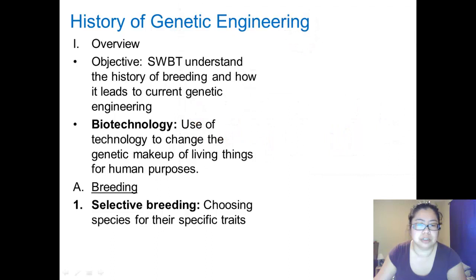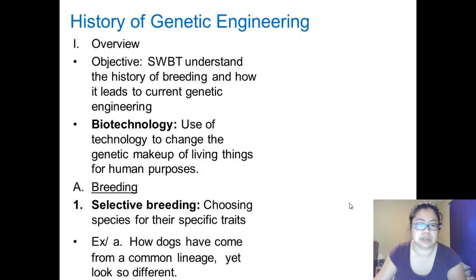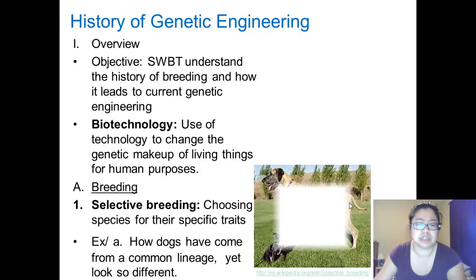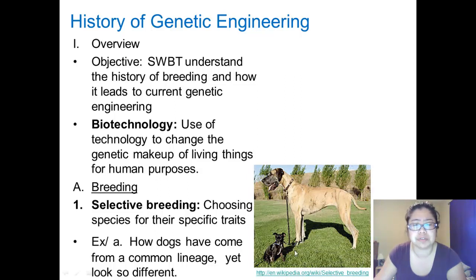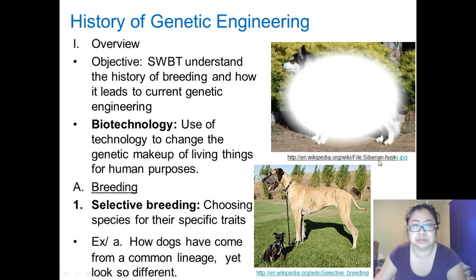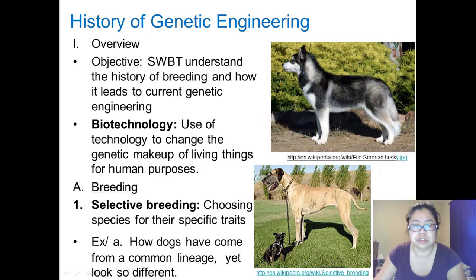There are three different types of breeding that we're going to talk about. The first type is selective breeding, where humans are choosing species for their specific traits. For example, dogs — we can look at dogs because we have so many varieties. How dogs have come from a common lineage yet look so different. Here we have an example of a Great Dane right next to a Terrier, and then we also see how these two dogs look so starkly different from a Siberian Husky, which is more closely related in lineage to today's common wolf.